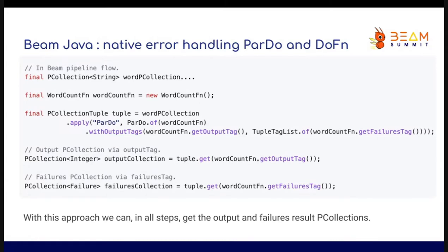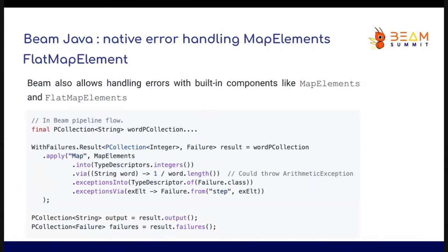With this approach I can recover my output and my failure. Beam also proposes built-in components: MapElements and FlatMapElements, which natively support error handling via exceptionInto and exceptionVia. ExceptionVia gives the type of the failure object, the current exception, and the current input element in an internal object. We can instantiate our custom object from the input element and exception, and also recover the output and failure via the structured results.